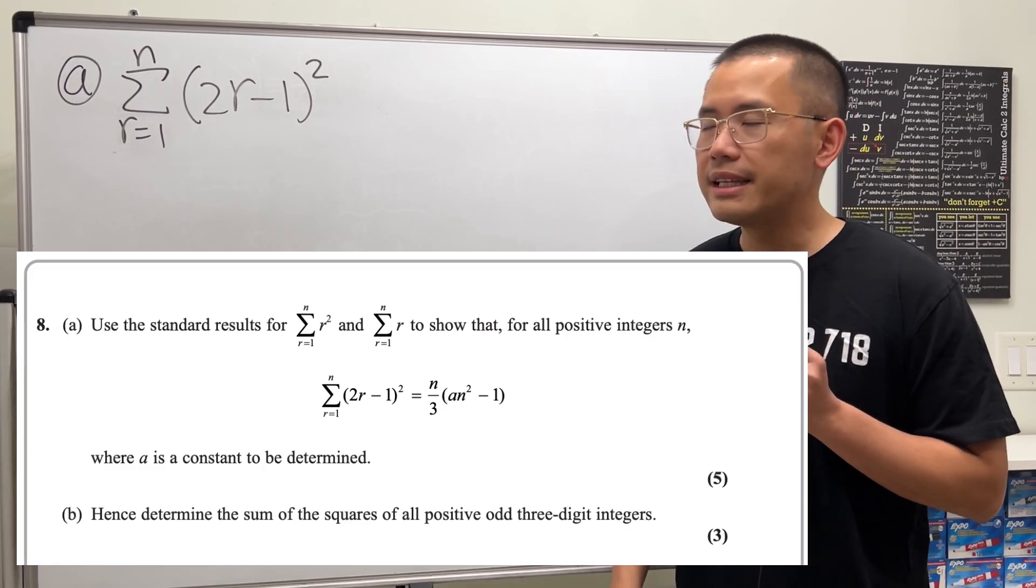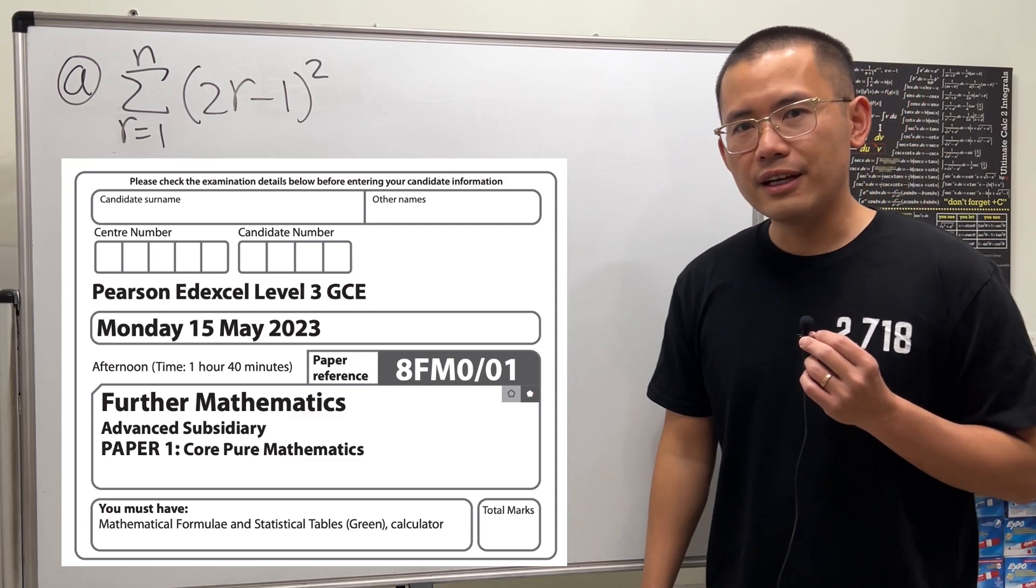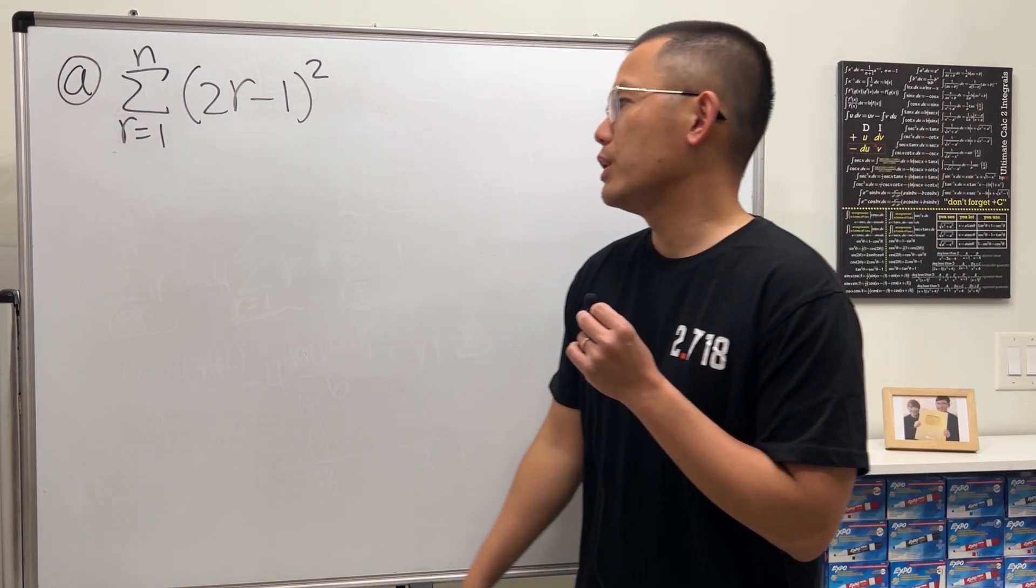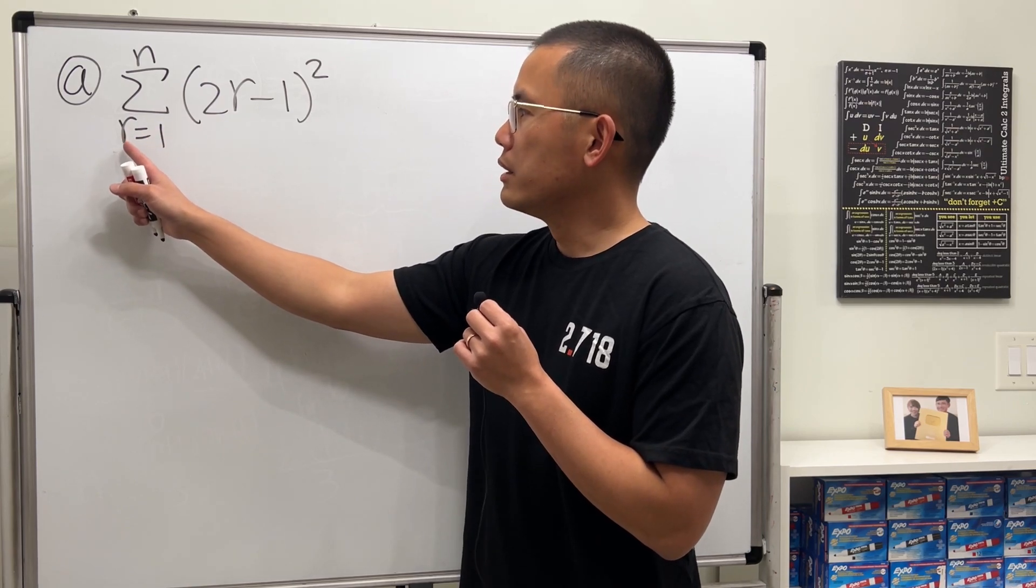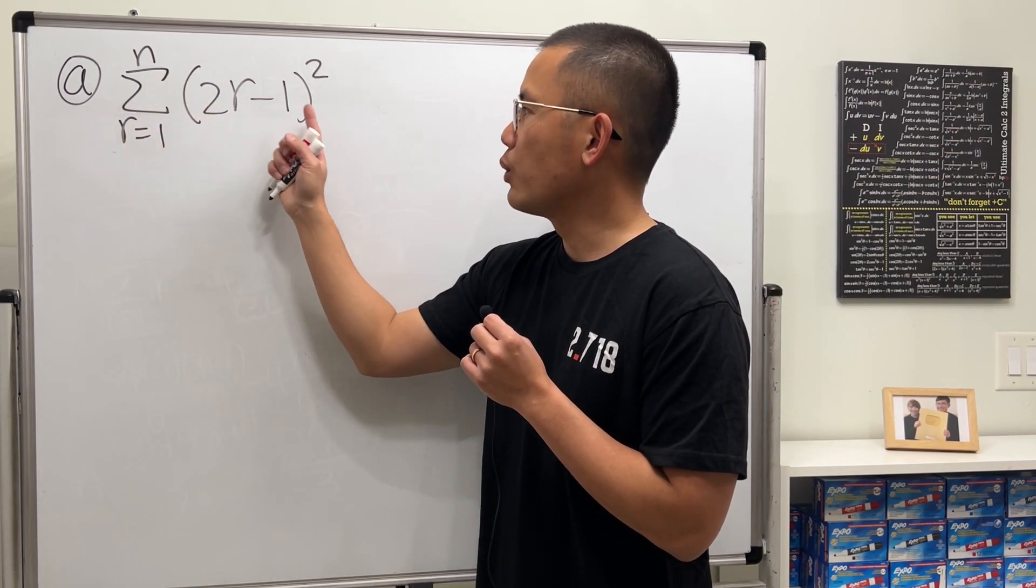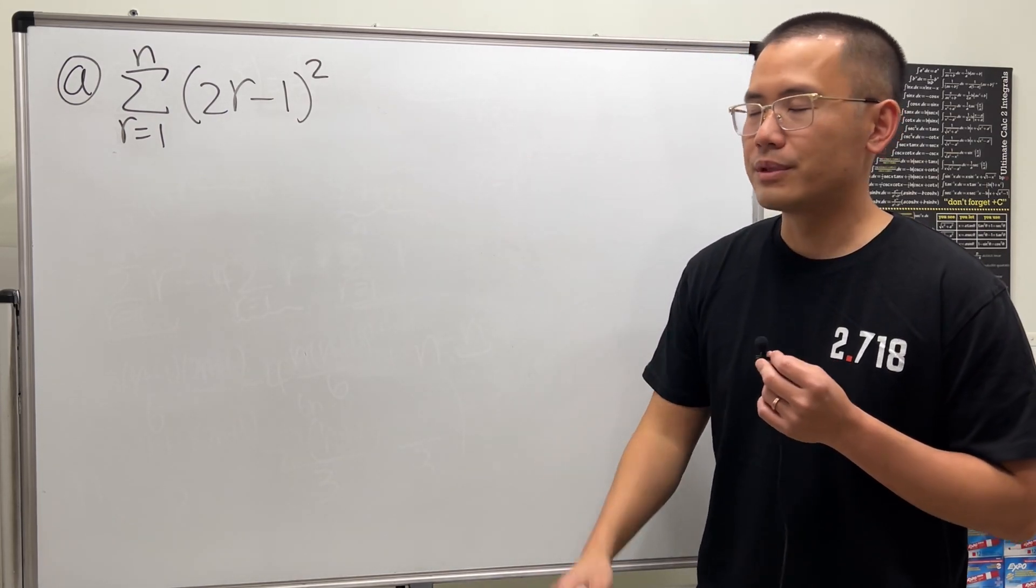My goal for this video is to help you understand how to solve this submission question from the 2023 AS level virtual math paper. We have two parts. The first part is that we are going to figure out a formula for this sum as r goes from 1 to n of 2r minus 1 squared. And this is asking us for the sum of the first odd square numbers.